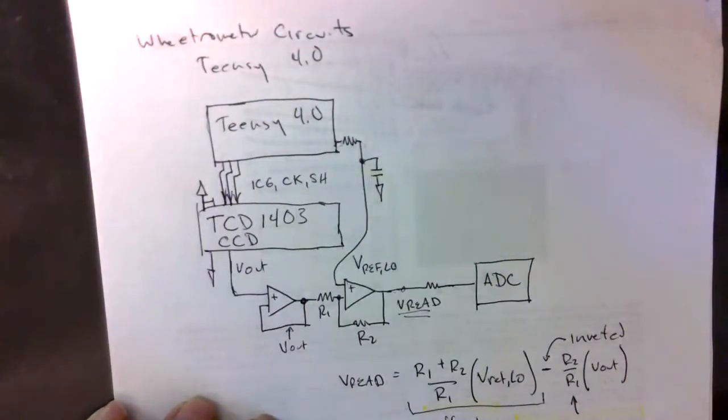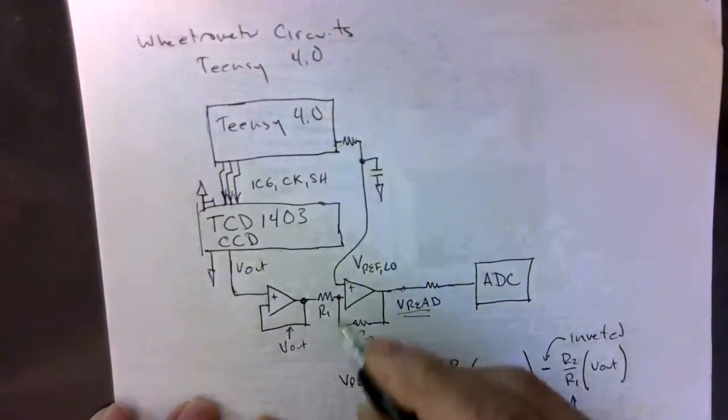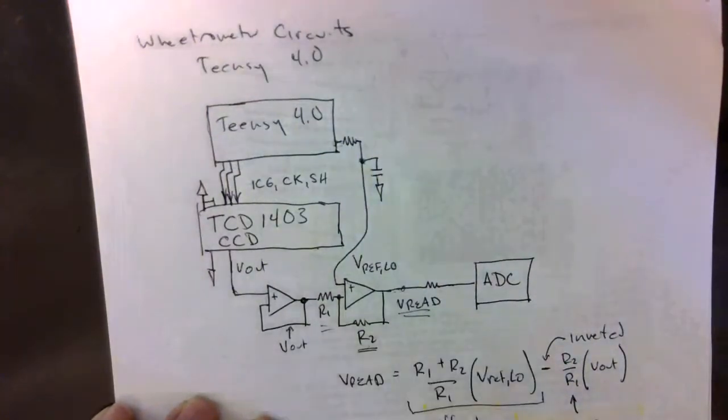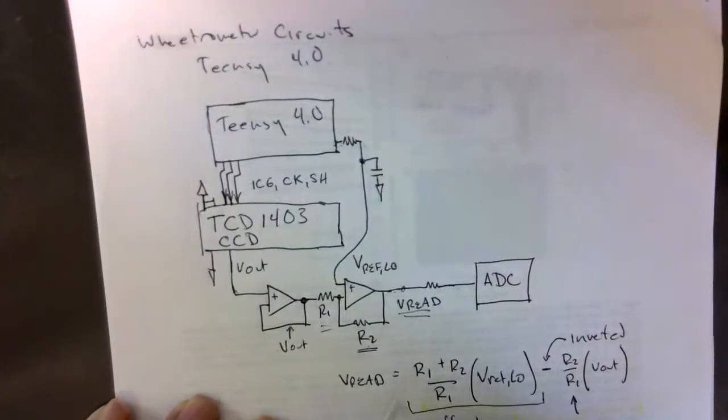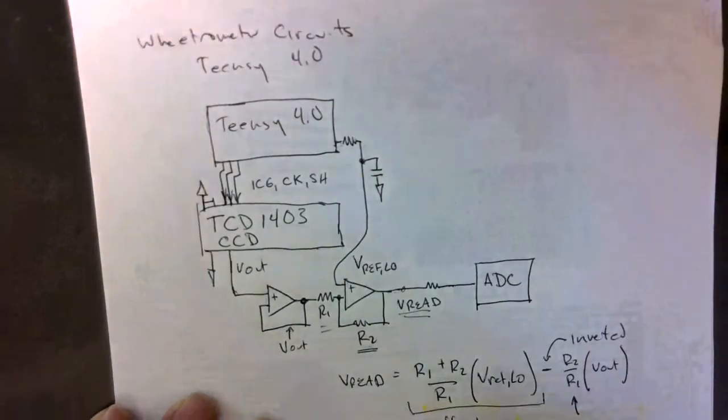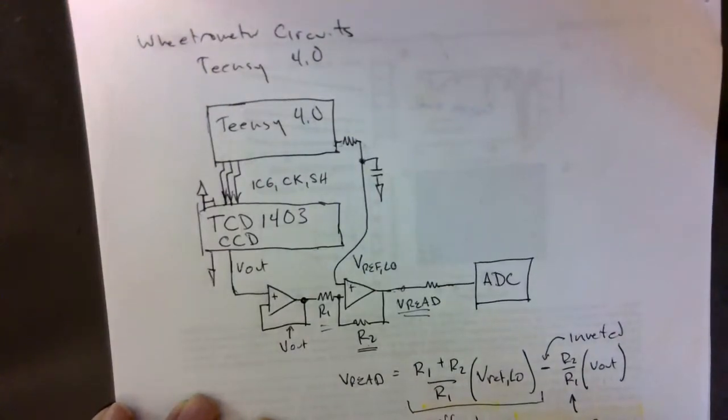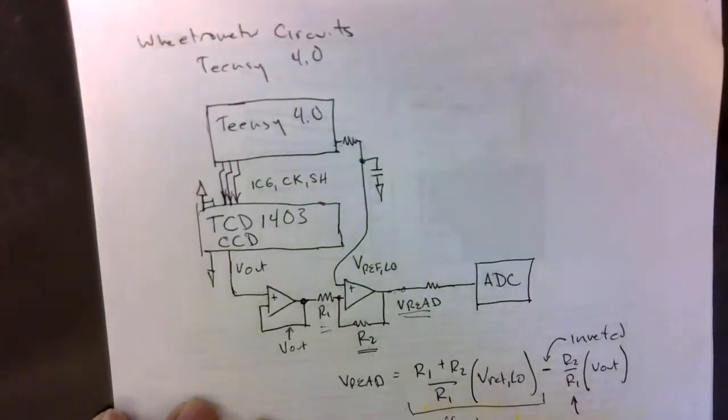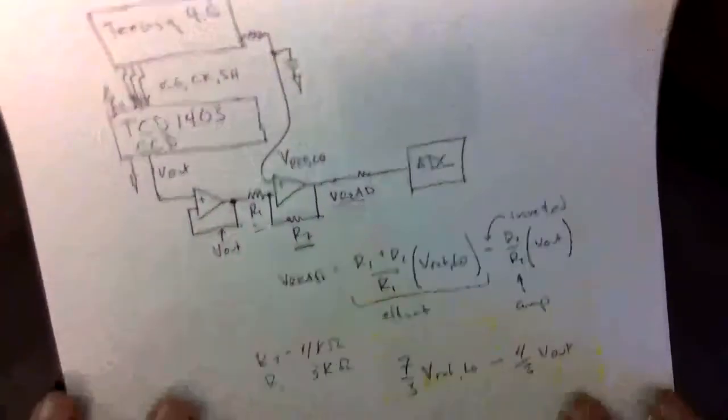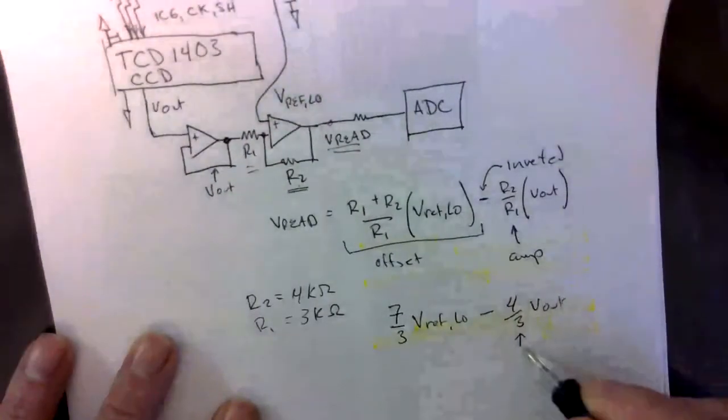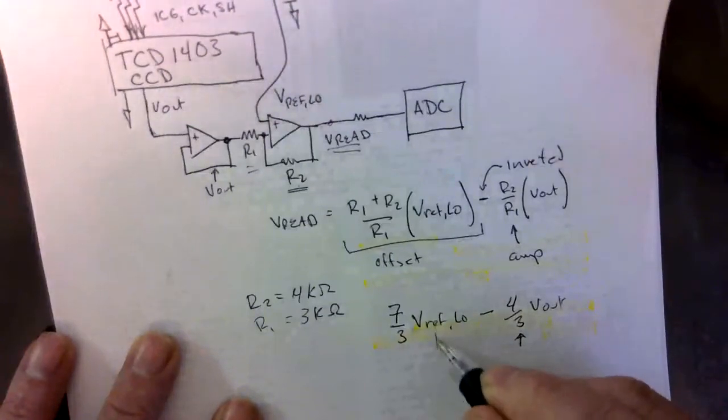What do we want to know about this? When I make these things, R2 is 4 kiloohms, R1 is 3 kiloohms. That means we have 7 over 3 times V ref low minus 4 over 3 times V out. Our amplification factor is 4 thirds.